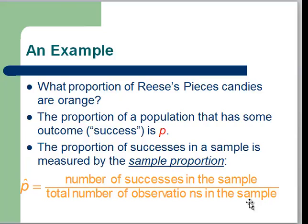If I count the orange candies, say there are 15 orange candies in there, then 15 divided by 37 would be my sample proportion for that particular package of Reese's Pieces candy.